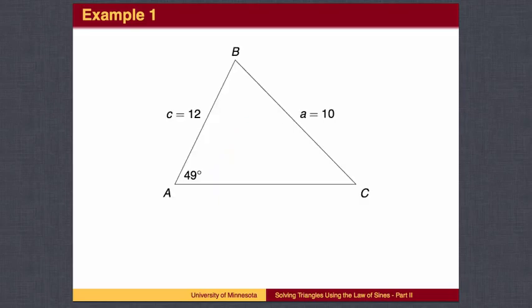Returning to our example, we can use the law of sines to find angle C with one bit of caution. The inverse sine function gives you the angle in the first quadrant with the appropriate sine value. There is also an angle in the second quadrant with the same sine value. To get the second angle, subtract the first quadrant angle from 180 degrees.